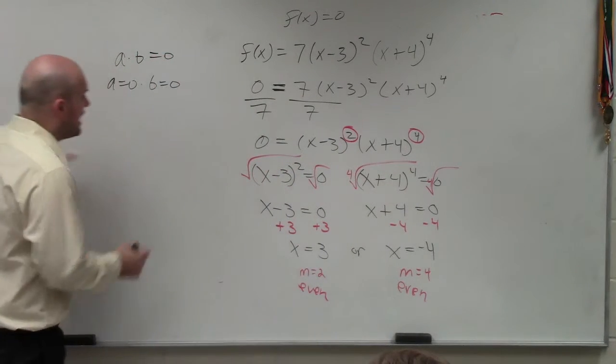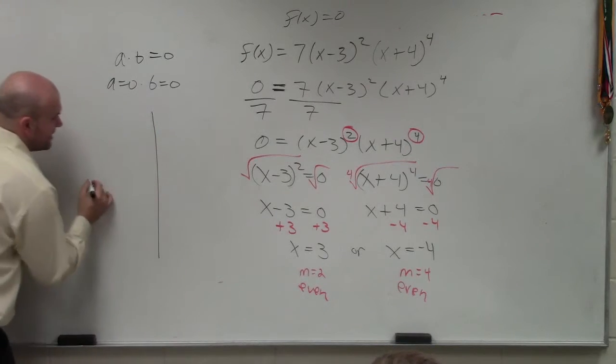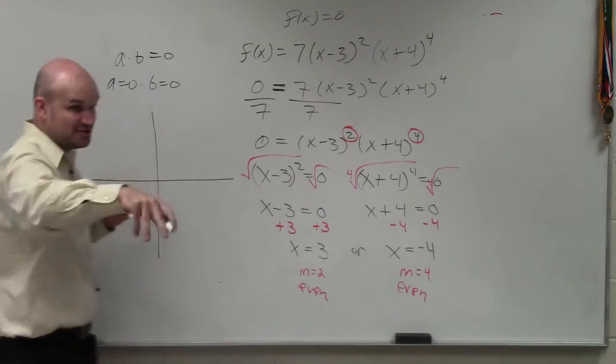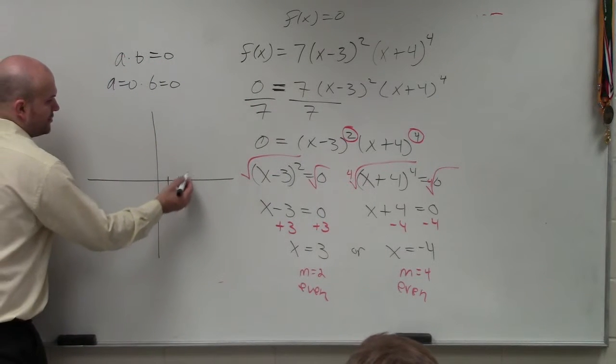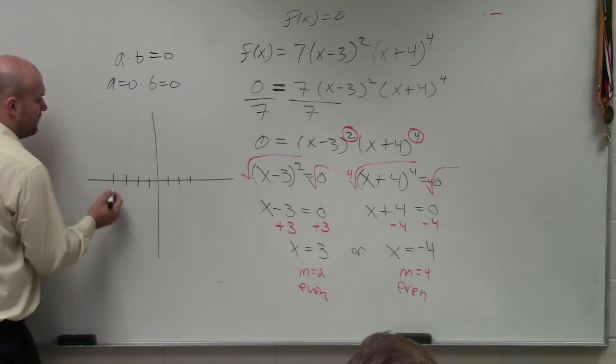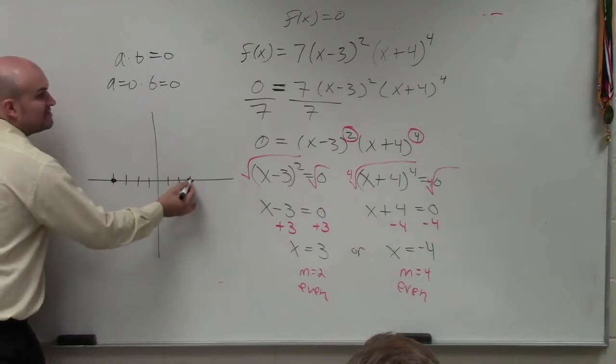And the reason why if it's even or odd is important, because if I was going to graph this, which they tell you to do, right? They ask you to sketch the graph. So in this case, I have 1, 2, 3, 4. I have two zeros.